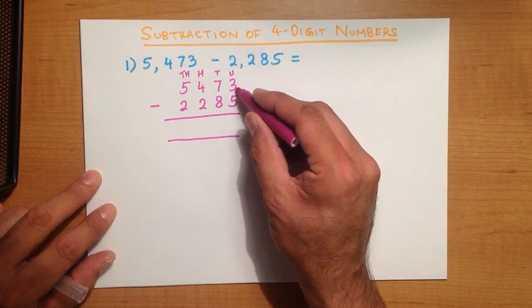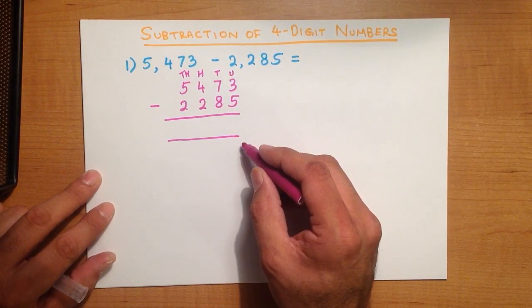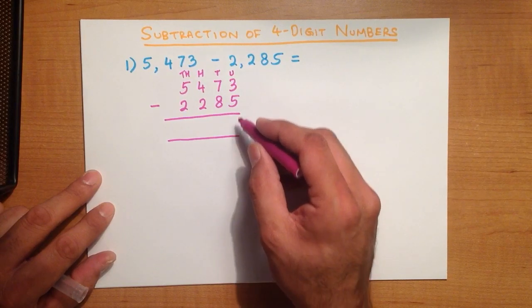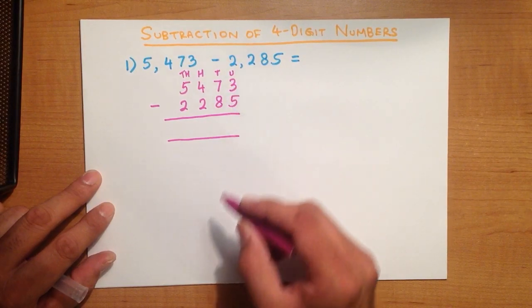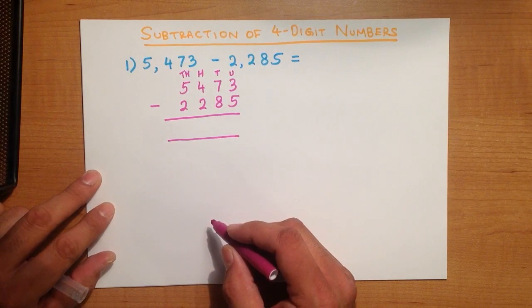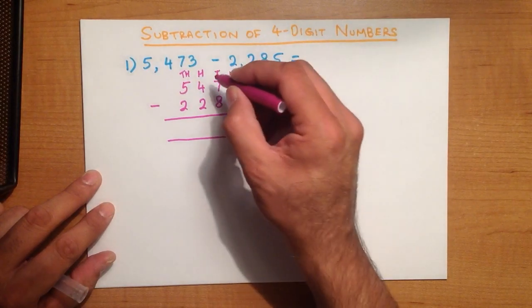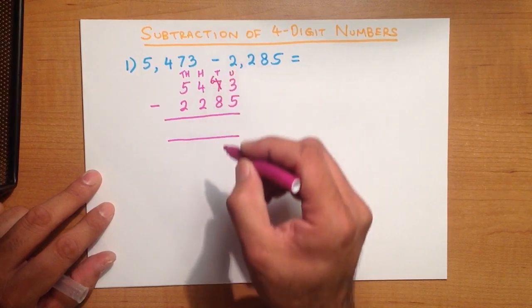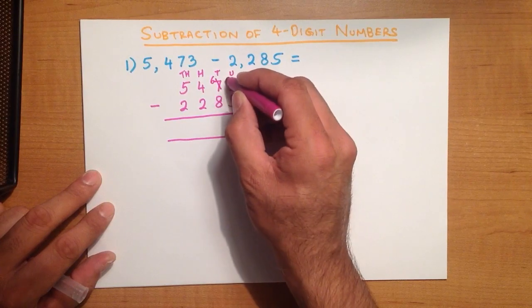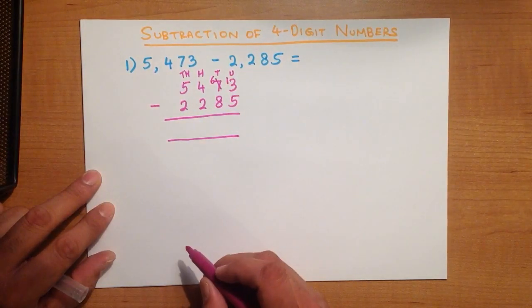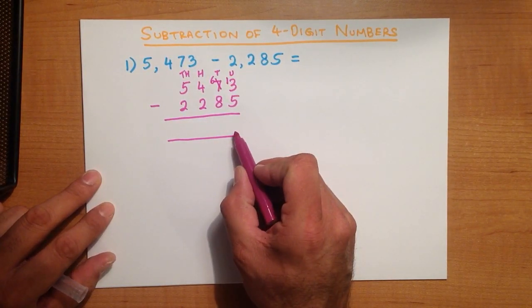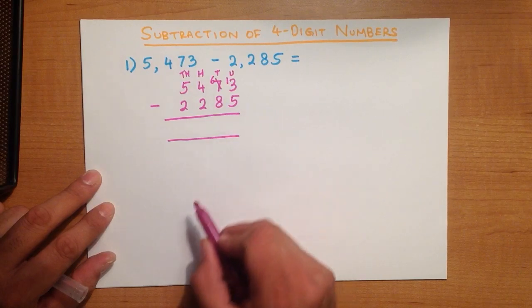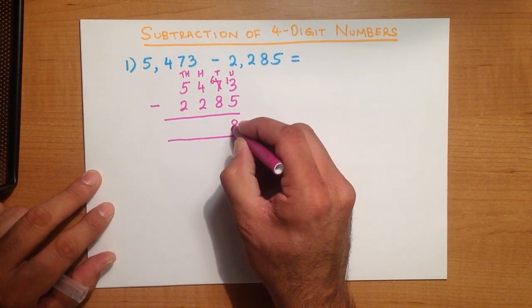What is 3 minus 5? Well, we can't do this because 3 is smaller than 5. Do you remember what we have to do? We will take 1 from here — we cross out the 7 and put in a 6, because 7 minus 1 is 6, and we put 1 here. So this column now becomes 13 minus 5, which is 8.